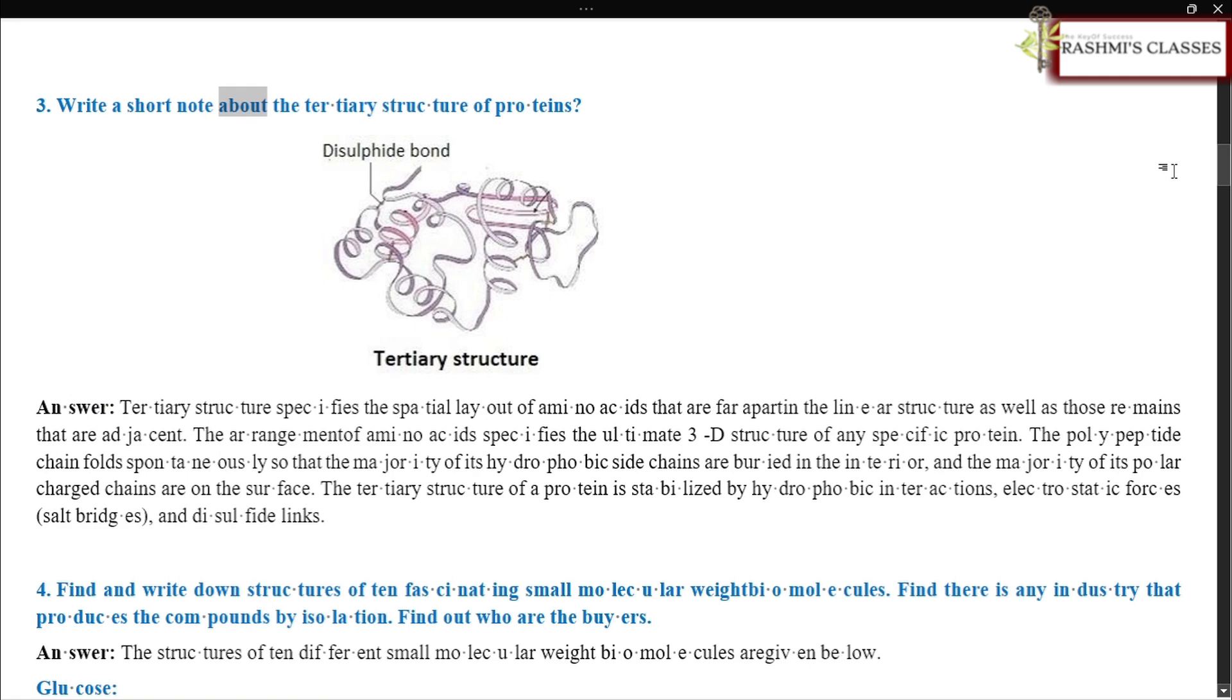Write a short note about the tertiary structure of proteins. Answer. Tertiary structure specifies the spatial layout of amino acids that are far apart in the linear structure as well as those remains that are adjacent. The arrangement of amino acids specifies the ultimate 3D structure of any specific protein. The polypeptide chain folds spontaneously so that the majority of its hydrophobic side chains are buried in the interior and the majority of its polar charged chains are on the surface. The tertiary structure of a protein is stabilized by hydrophobic interactions, electrostatic forces, salt bridges, and disulfide links.